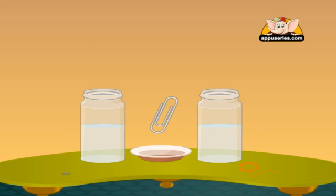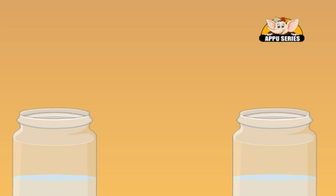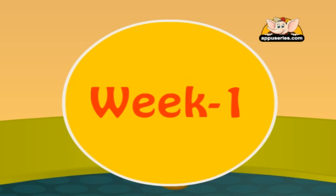Now, attach a paper clip to each end of the wool like this. Place the ends in the jars in such a way that the wool hangs between the jars. This is where the stalactite will form soon. Place the bowl between the jars to catch the drips that will fall from the wool. Leave the jars for about a week undisturbed.